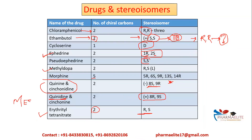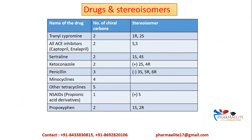So the drugs that are RS — methyldopa, ephedrine, and erythrityl tetranitrate — can be remembered with the mnemonic MEAT: M for methyldopa (RS), E for ephedrine (RS), and ET for erythrityl tetranitrate (RS). You can also extend it to MEAT-QC, where Q is quinidine and C is cinchonidine — both being RS. That's how you can make it easy for yourself.